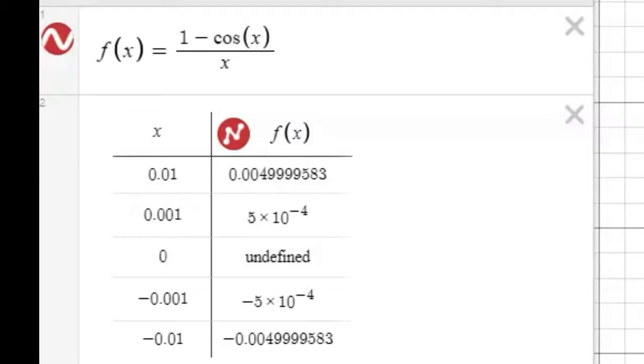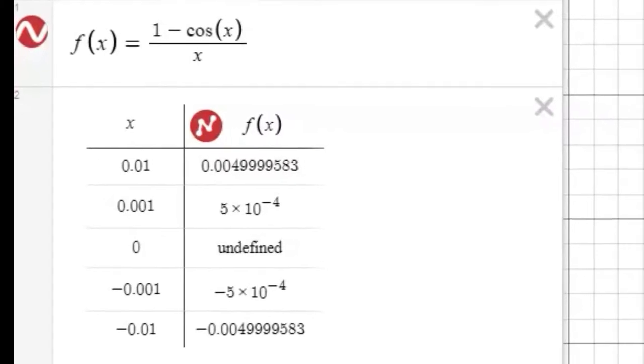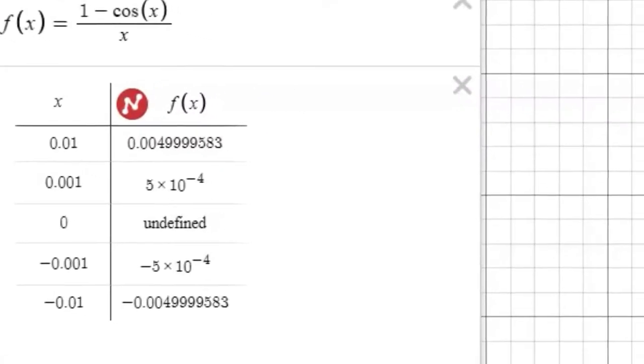Again, on the board, we use the Greek letter theta to highlight that we're thinking about angle measures. On Desmos here, I just conveniently use the input value of x. But still, x represents these angle measures. So as x, as the angle measure gets closer and closer to zero, what is happening to the output of this function?